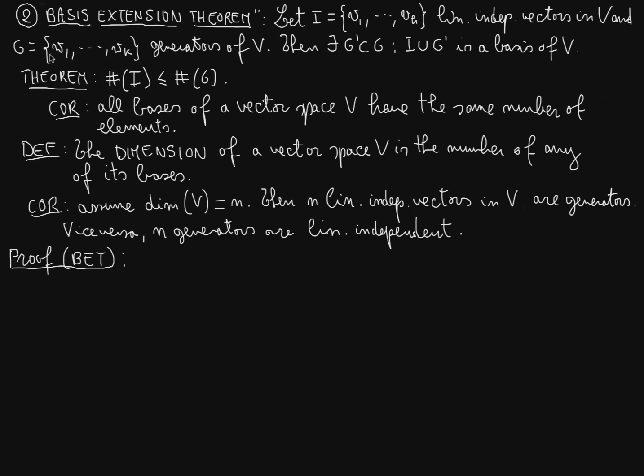Using the fact that these ones are generators, every vector in I is a linear combination of vectors in G. We start from V1. First step: we can certainly write V1 as a linear combination for i that goes 1 to k.